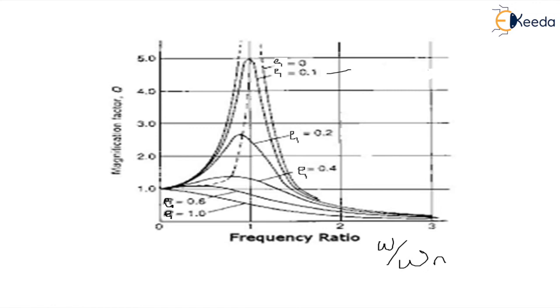We see that as the frequency ratio increases, magnification factor also increases. The second thing we see is that when the frequency ratio is one, that means when omega is equal to omega n, magnification factor is not infinite.